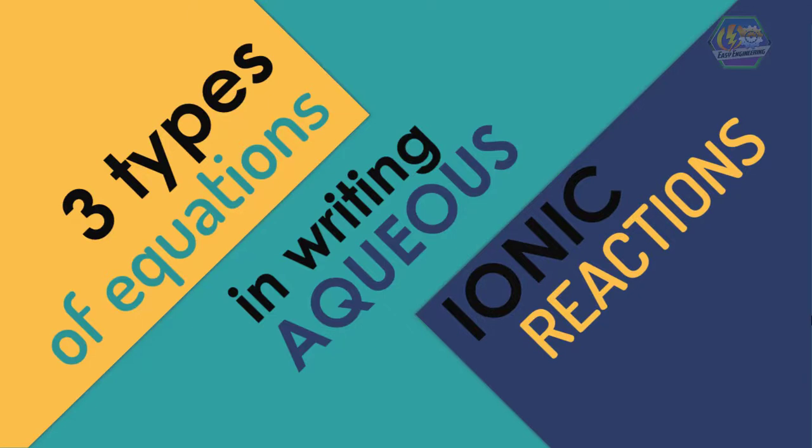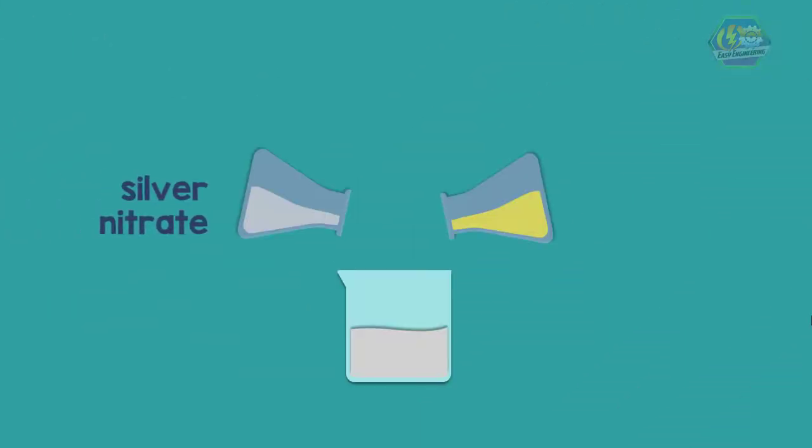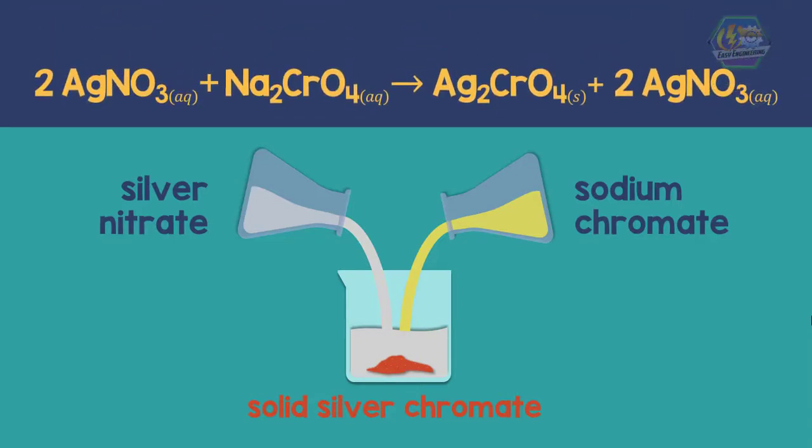When silver nitrate and sodium chromate are mixed, solid silver chromate forms. When we write this in a balanced equation, we will have what is known as the first equation, the molecular equation.